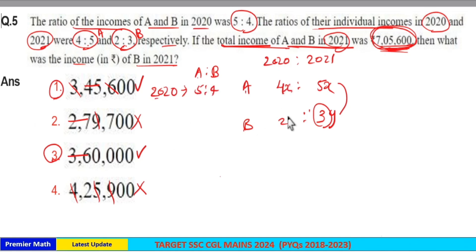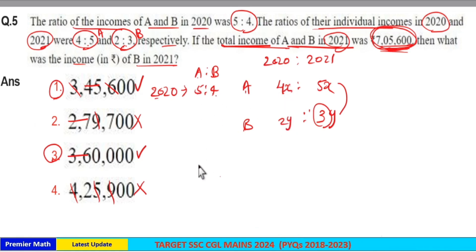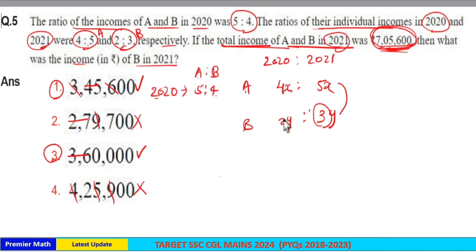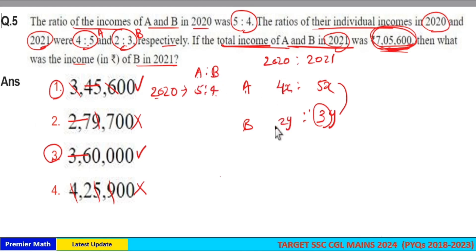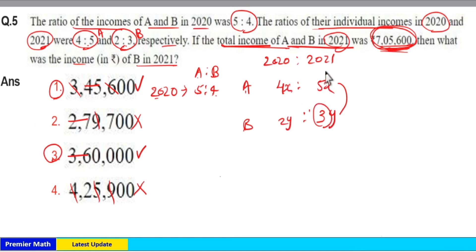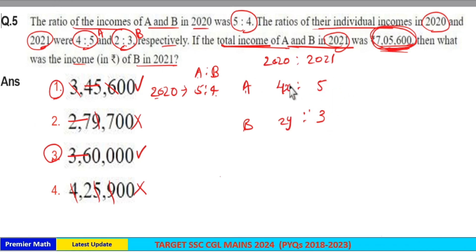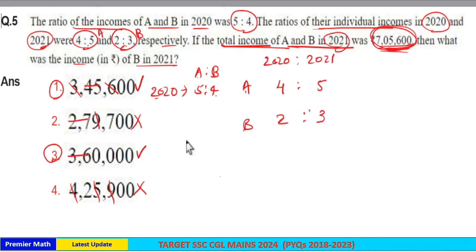In 2020, A's income is 4x and B's income is 2y. If we equate 4x and 2y in the ratio 5:4, we get a relation between x and y. This relation in 2020 means the ratio 5:4 holds, and when we use it, we get a relation between A and B in 2021 as well. So equate 4x and 2y as 5 and 4 to get the relation for 2021.